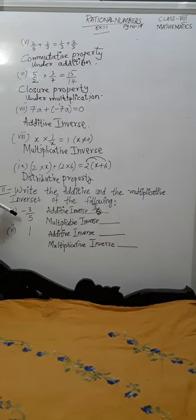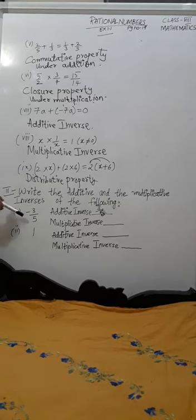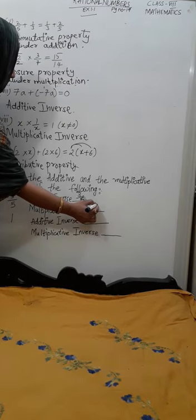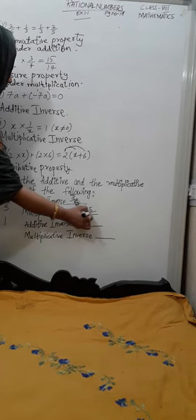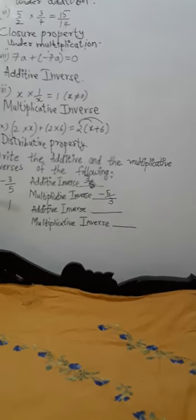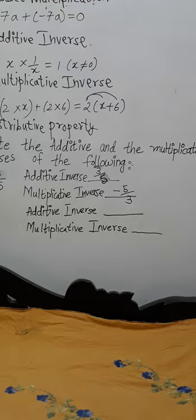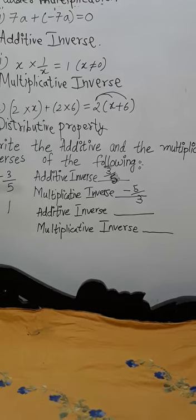And for multiplicative inverse, we have to reciprocate it. So, the answer will be minus 5 by 3. Additive inverse is plus 3 by 5. Multiplicative inverse is minus 5 by 3.